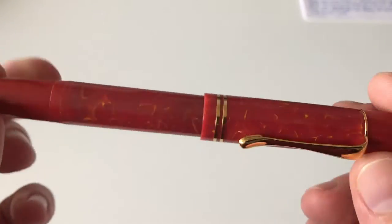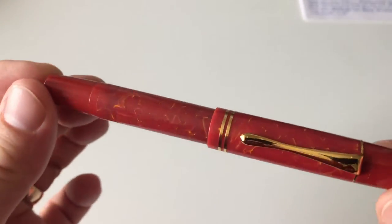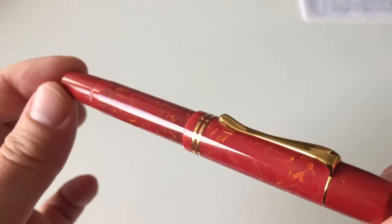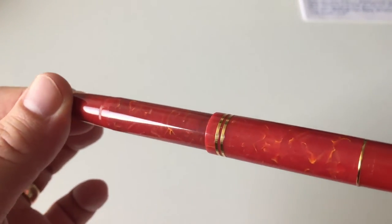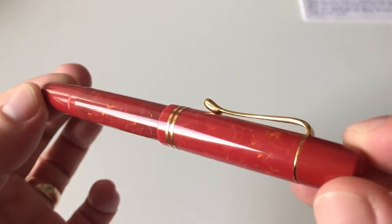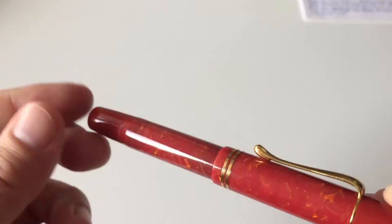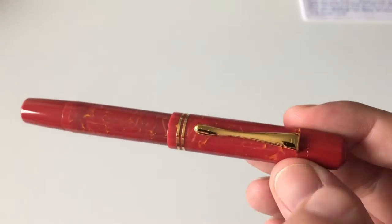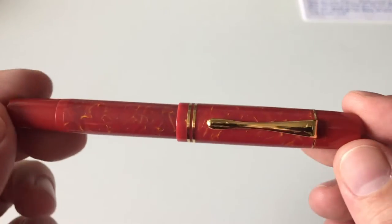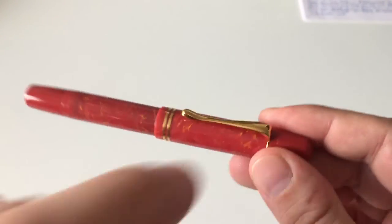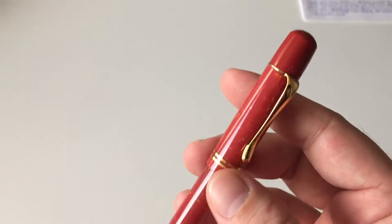We've already talked about this yellow-orange marbling that sort of plays and swirls around the whole pen's body here, cap and barrel. The accents that we have are 24-karat gold plated, and the nib is a 14-karat gold nib.